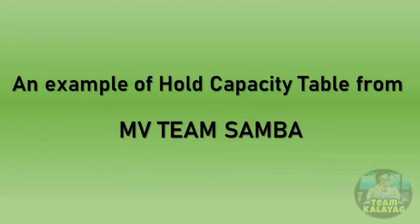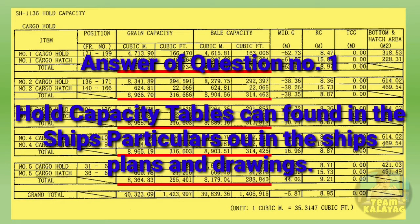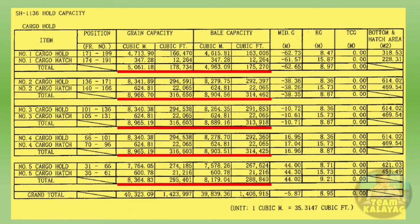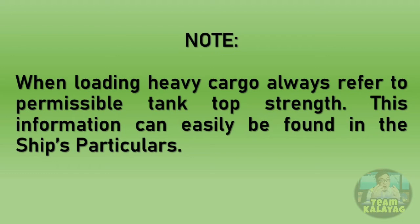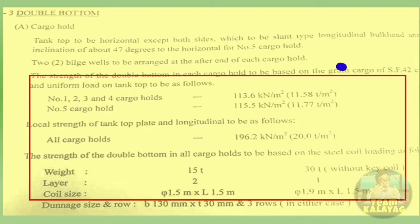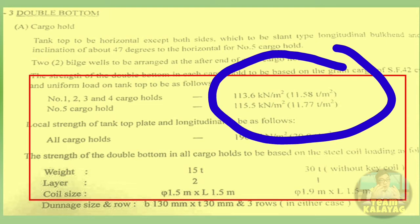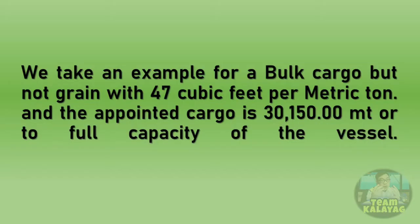Here is an example of a hold capacity table from the vessel MV Team Samba. When loading, always consider the tank top strength. This information can easily be found in the ship's particulars. We take an example for a bulk cargo — but not grain — with a stowage factor of 47 cubic feet per metric ton. The appointed cargo is 30,150 metric tons, or to full capacity of the vessel.